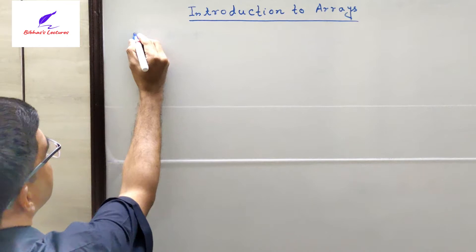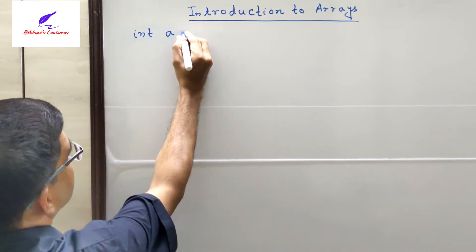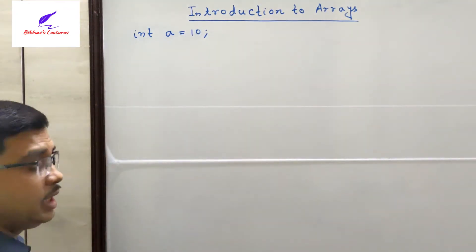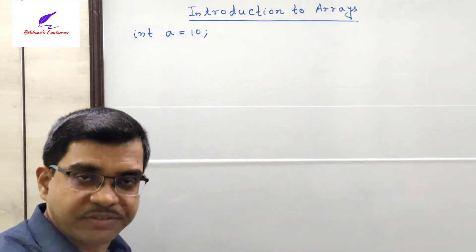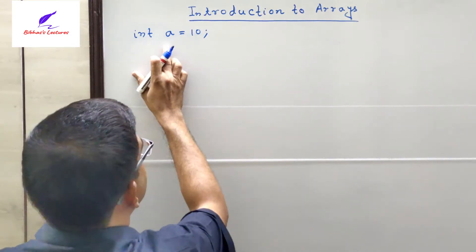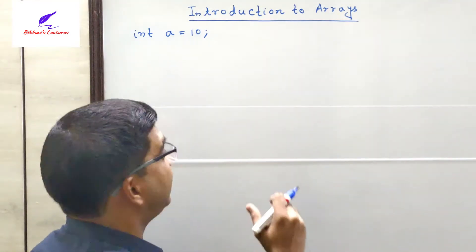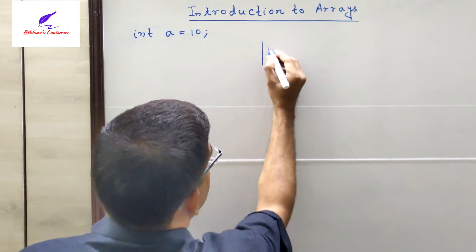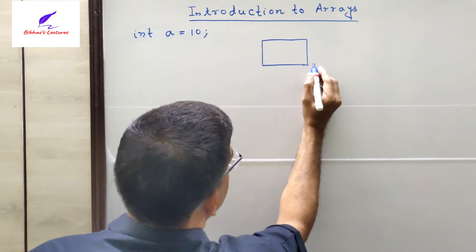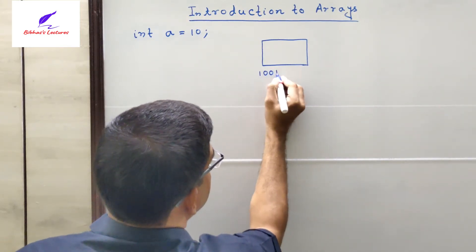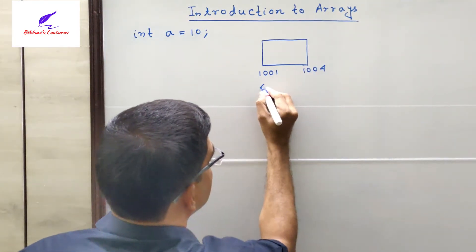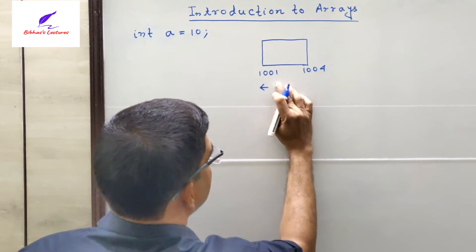Please look at the board. First, I am declaring an integer variable A, where I am assigning a value 10. Now immediately after executing this line by the C compiler, the compiler will take exactly three actions one after another. First, the compiler will check that it is an integer variable. So if you are dealing with a 32-bit compiler, integer will take four bytes of memory. Suppose the memory allocation is starting from 1001, so it will end at 1004. So the compiler will first allocate four bytes of memory.